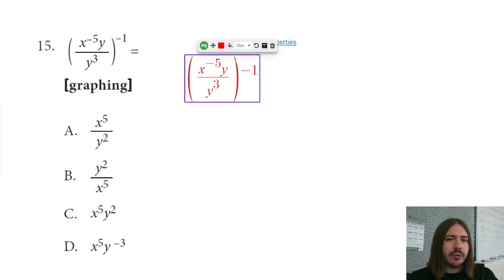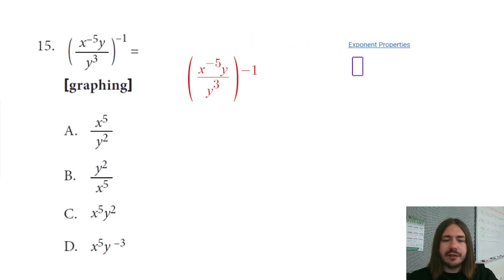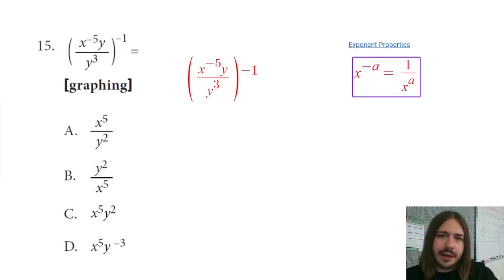So the first thing I'm going to do is try to rewrite this so I don't have a fraction. The exponent property that I'm going to use here, I'll just kind of keep track of them over here. First one I'm going to say is that anytime you've got a negative exponent, let's say I've got x to the negative a exponent, so like negative two or something like that, I can rewrite that as one over x to the positive a. And so that's how you deal with these negative exponents.